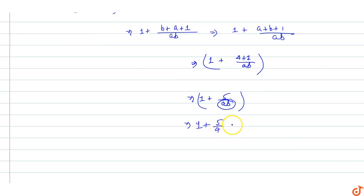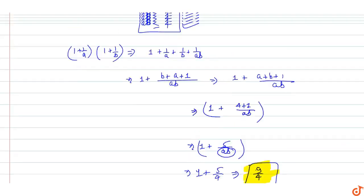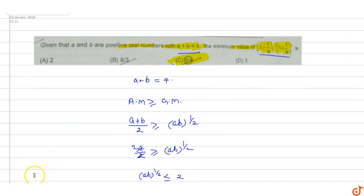Which equals 9/4. So the minimum value of (1 + 1/a)(1 + 1/b) equals 9/4, so C will be the correct option.